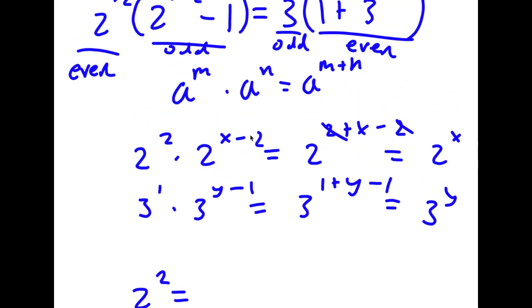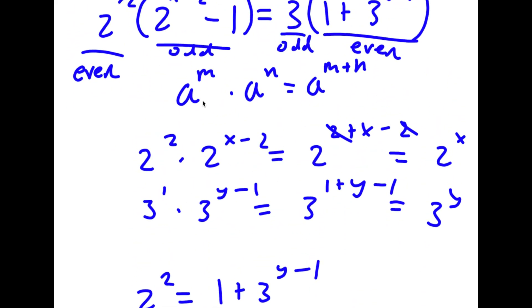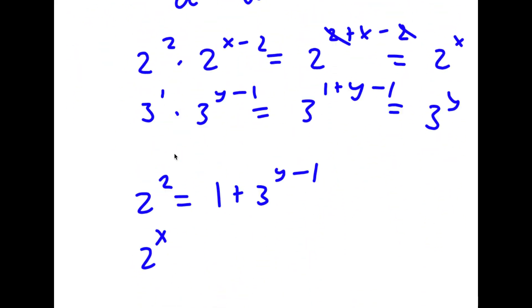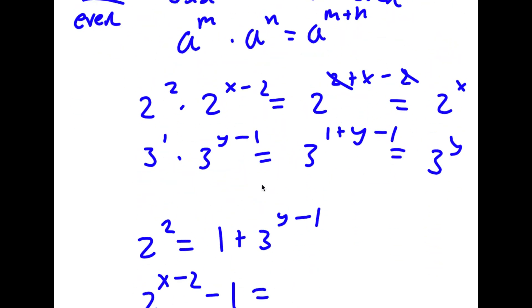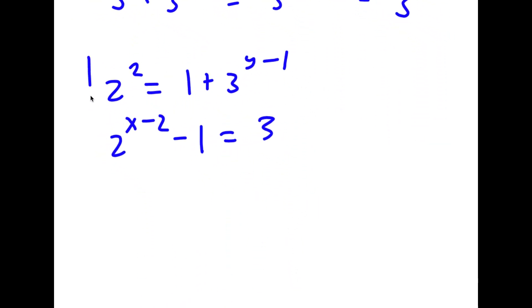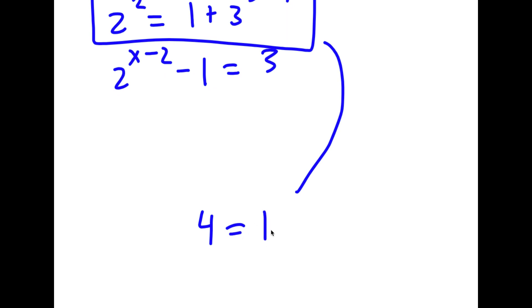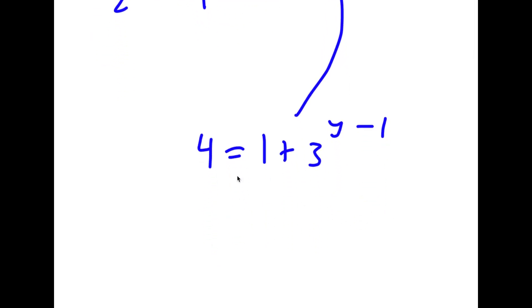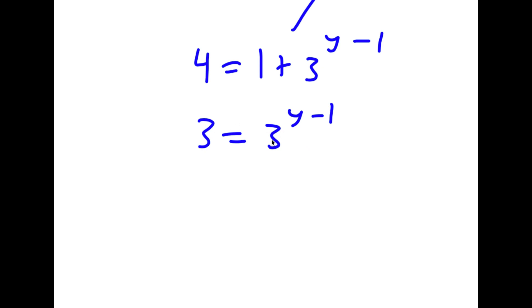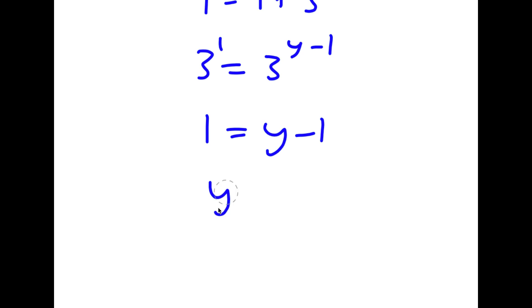So I have 2 squared equals 1 plus 3 to the power of y minus 1, and 2 to the power of x minus 2 minus 1 equals 3. For the first equation, 4 equals 1 plus 3 to the power of y minus 1. Subtracting 1 gives 3 equals 3 to the power of y minus 1, and since 3 is 3 to the power of 1, the exponents match, so y minus 1 equals 1, meaning y equals 2.